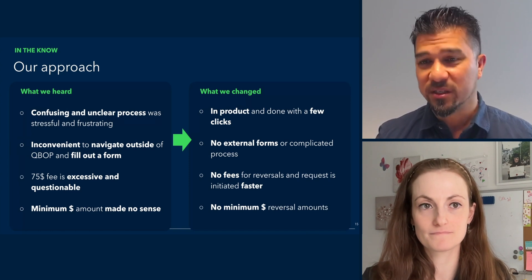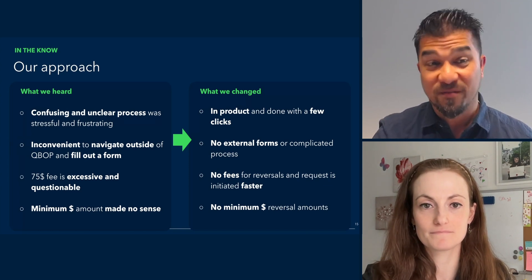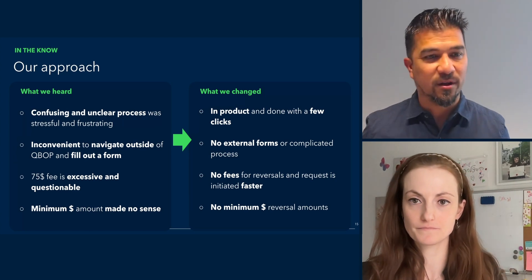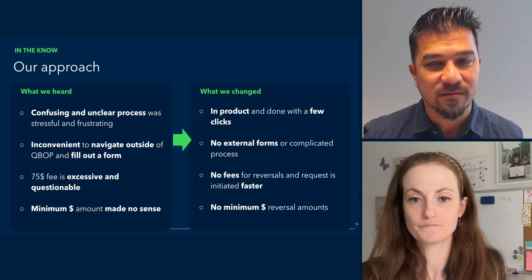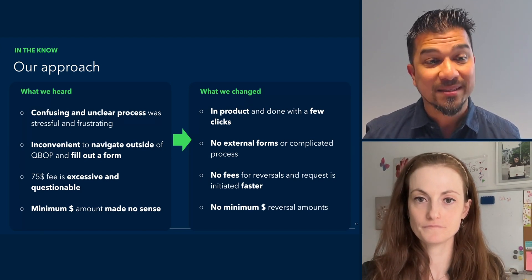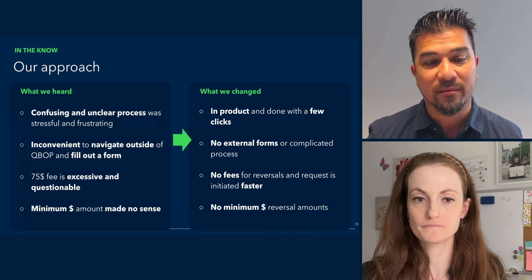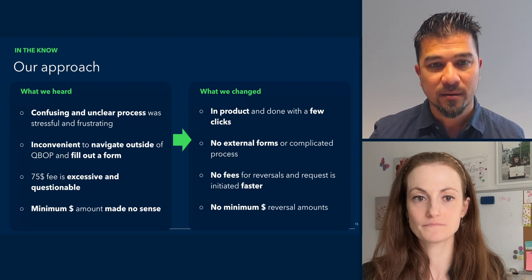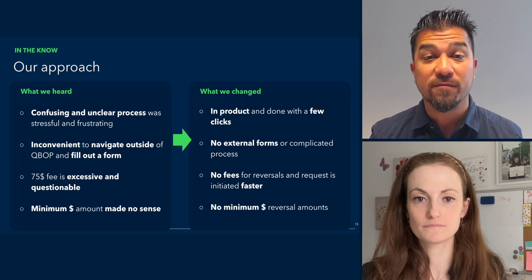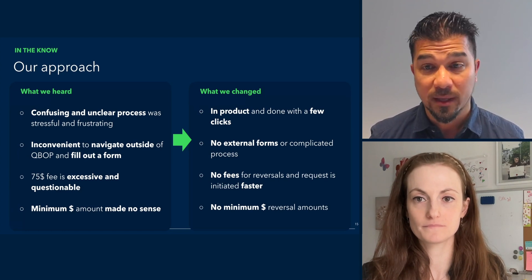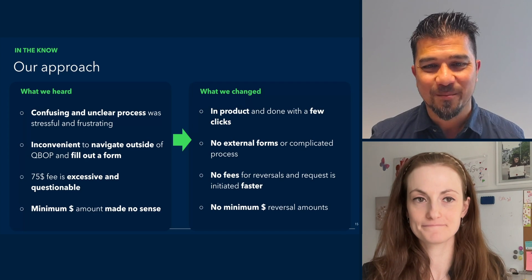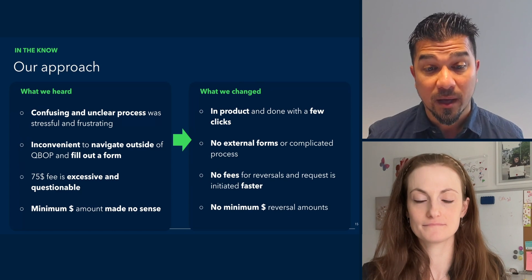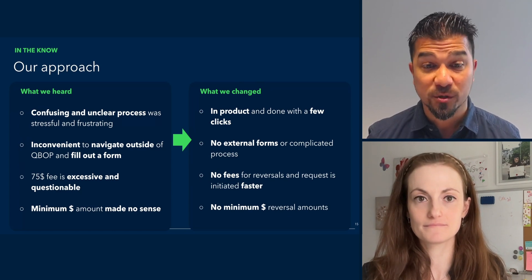We know that it's inconvenient to navigate outside of QBOP — QuickBooks Online Payroll — and you have to fill out a form. You have to pay a $75 fee, which has been excessive and questionable for some of our customers. And with that $75 fee, we required a minimum amount that really made no sense for people. So what we've changed is we've taken that process out and put it into the product with just a few clicks. There are no external forms, no fees, and the request is initiated faster. There's no minimum amount for that reversal payment because of the no fee.